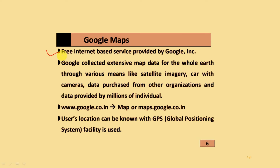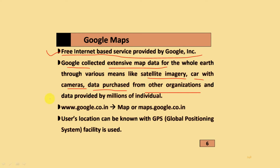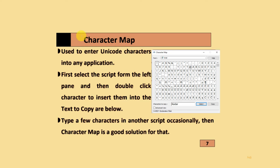The next topic is Google Maps. It is a free internet-based service provided by Google. Google collects extensive map data for the whole earth through various means like satellite imagery, cars with cameras, and data purchased from different organizations, as well as data provided by millions of individuals. The site is google.co.in or maps.google.co.in. The user's location is determined using the Global Positioning System, known as GPS.